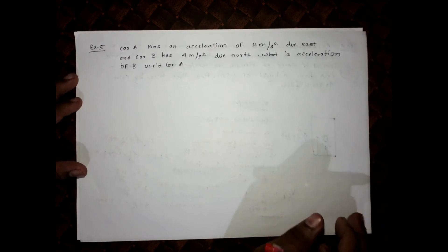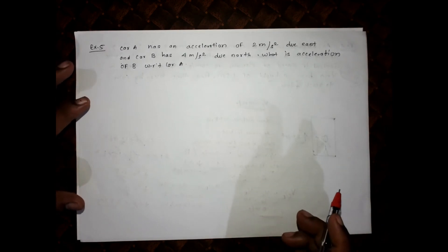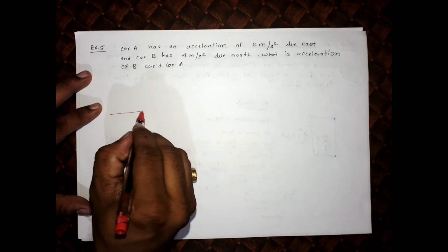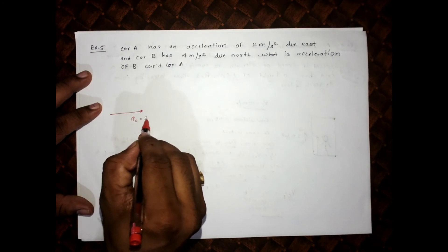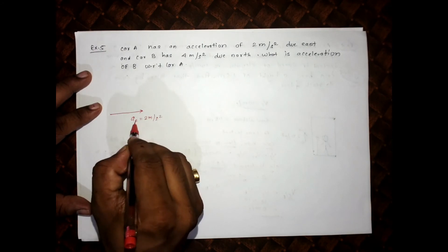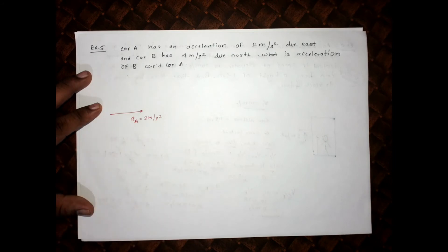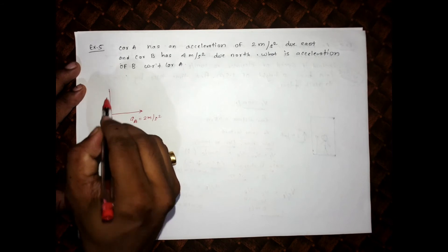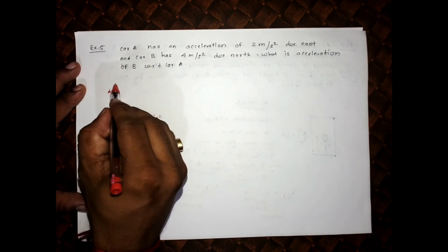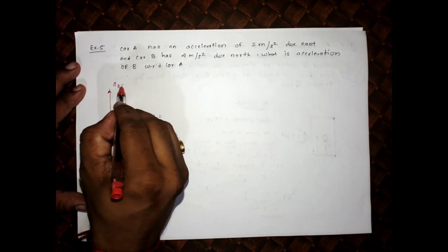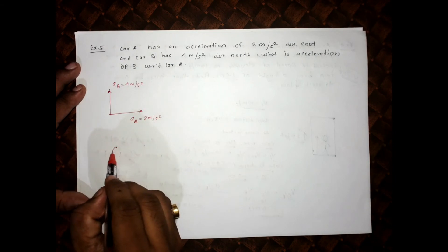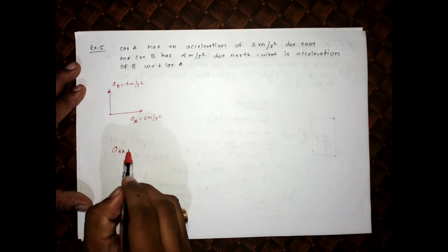Next problem: car A has an acceleration of 2 meter per second square due east, and car B has an acceleration of 4 meter per second square due north. What is the acceleration of B with respect to A?